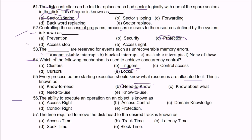Question 56: The ability to execute an operation on an object is known as access right. A is the answer.